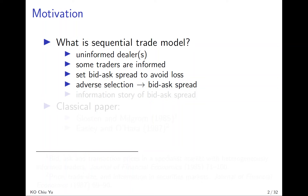The reason is that informed traders are sure to gain from the dealers, and to compensate this loss and make profit from the uninformed, we have the information story for the bid-ask spread. In another model — the inventory model — we explain the bid-ask spread due to unbalanced demand and supply.